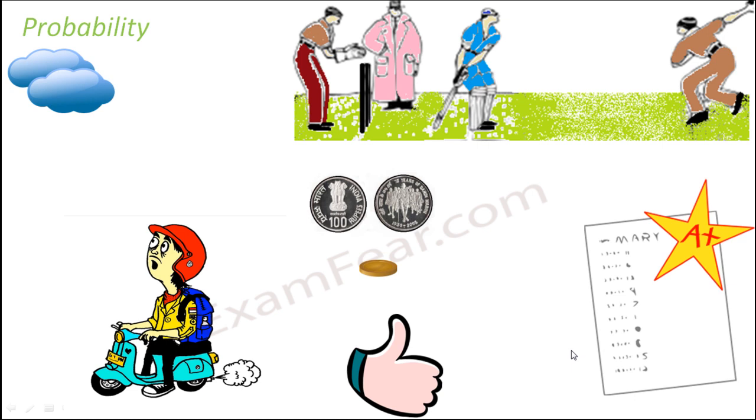So in all of these examples, what do you see? You see that everywhere there is something called possibility. There is a possibility that it might rain, there is a possibility that it might not rain. So everywhere it is a matter of chance.